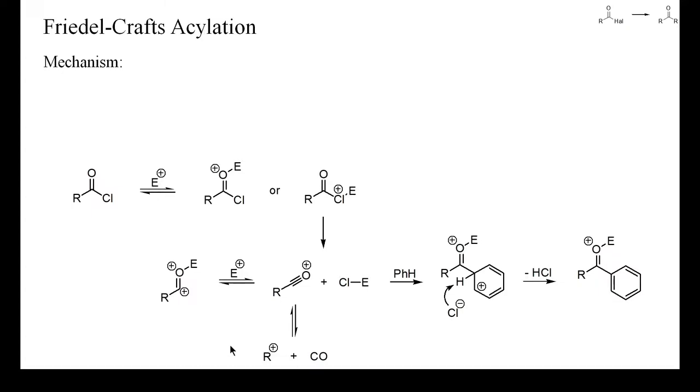The standard Friedel-Crafts acylation requires the use of stoichiometric amounts of aluminum chloride, because the product is a complex of the ketone with aluminum chloride. Ketones are stronger Lewis bases than acyl halides and the complex of the ketone with aluminum chloride does no longer mediate the acylation reaction.